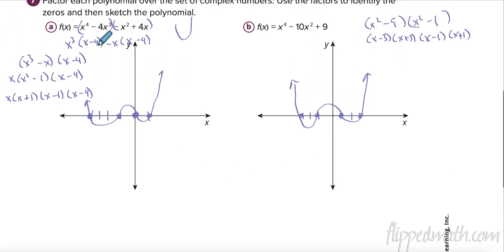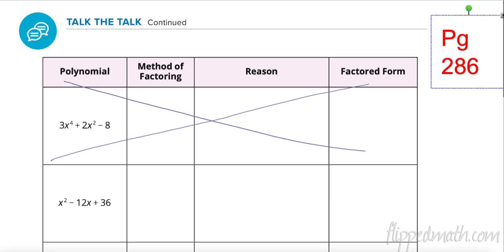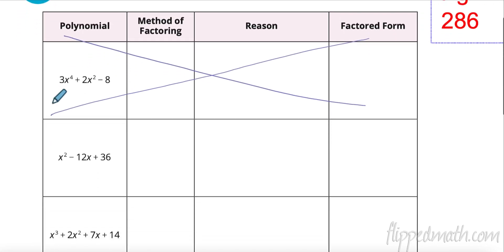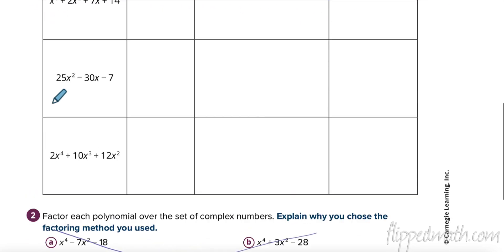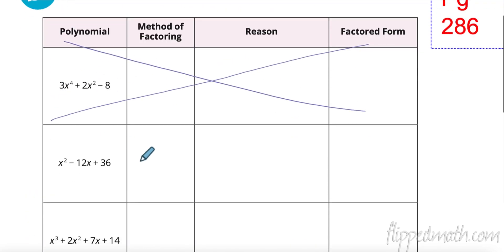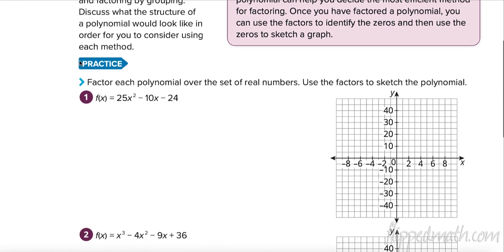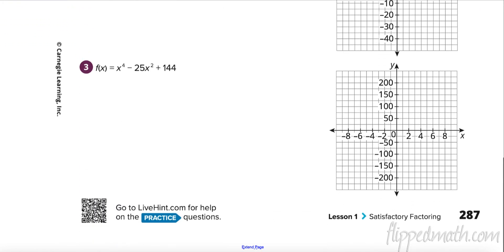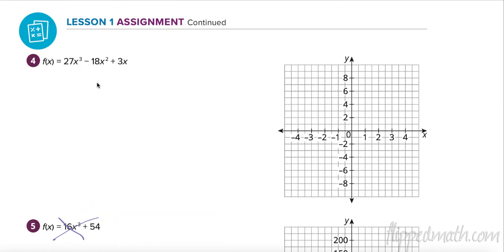That's the lesson. Homework tonight is on page 286 - do the table, just factor each expression. On page 287 do numbers 1, 2, and 3, and then on the next page number 4. Best of luck - if you have questions, the biggest thing is to ask for help.